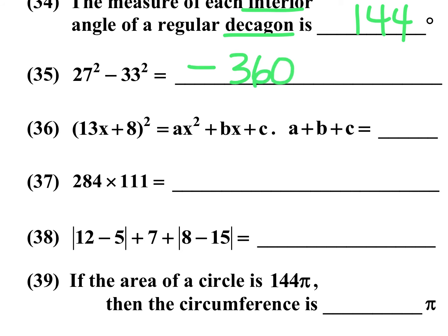Number 36, 13x plus 8 quantity squared is equal to ax squared plus bx plus c, and they want the sum of the coefficients, a plus b plus c. I mean, the long way would be to take 13 squared, and then twice approximately the 2, and then 8 squared, and that's really too long. All you have to do is add 13 plus 8, which is 21, and then you square that. And 21 squared, I think you already know that the answer with that is 441. All I'm doing is 13 plus 8, 21, square that, and that gives you the sum of the coefficients.